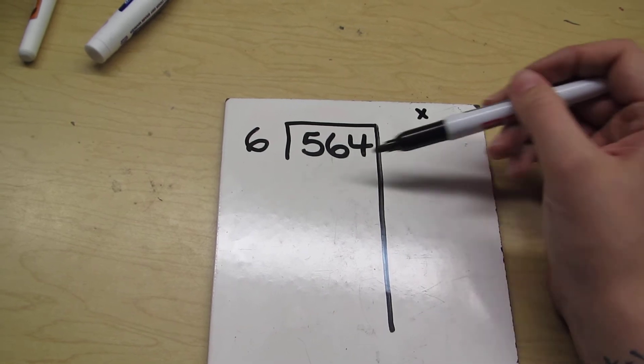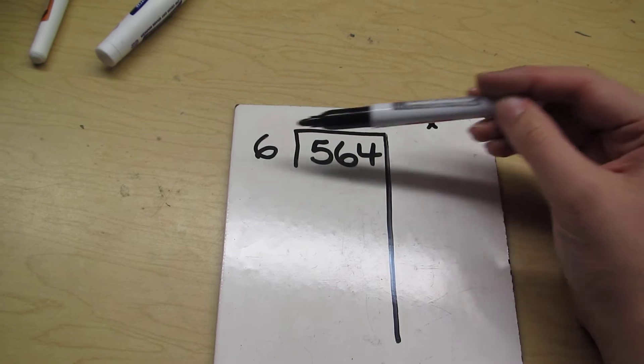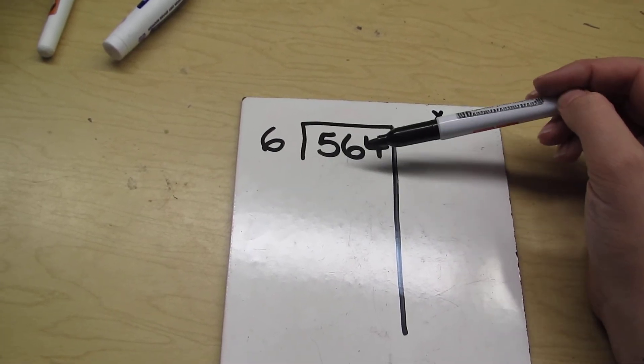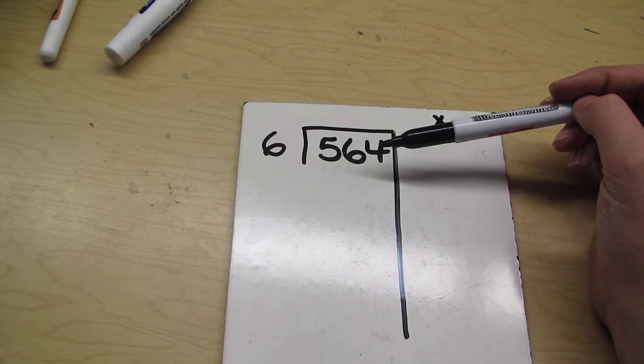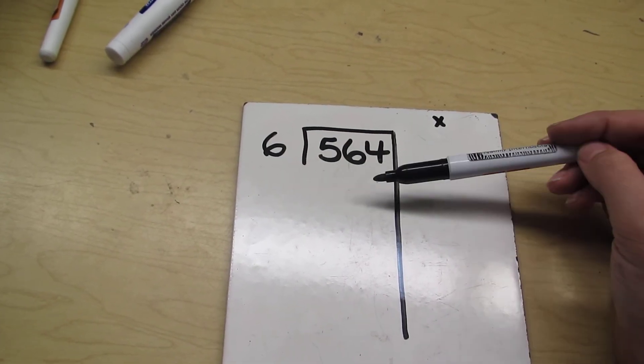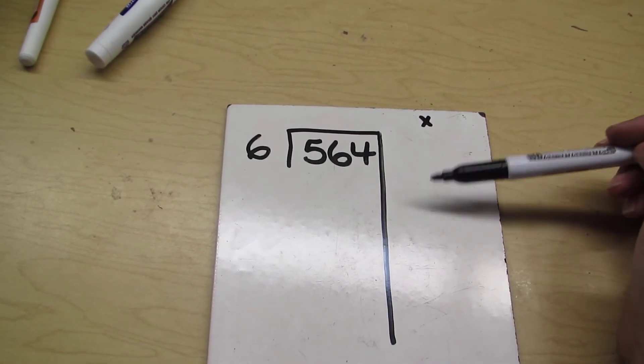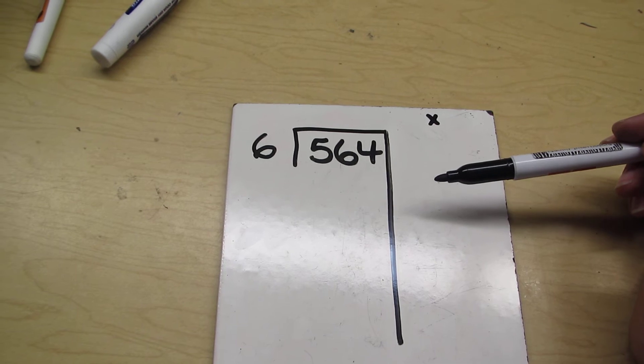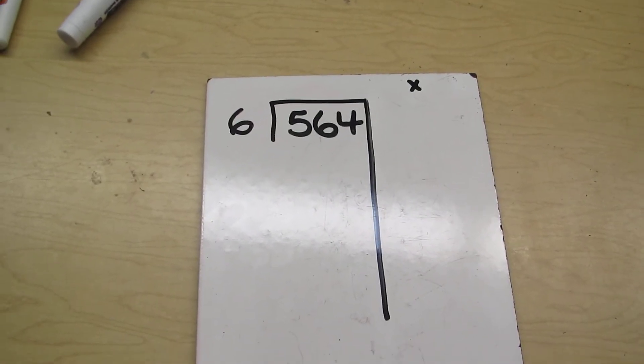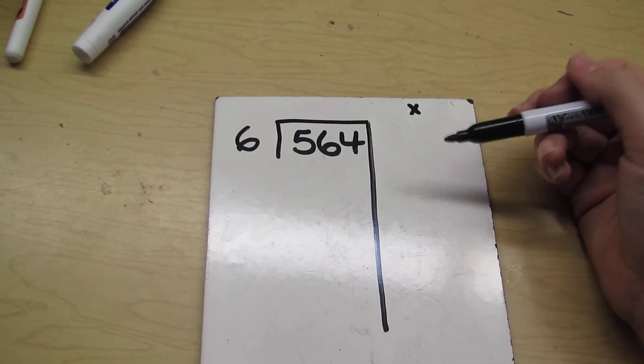We have to think about a number that's going to be multiplied by 6 that is as close as possible to the number we're working with. We want to do 6 times something that's close to 564. It's really important that the numbers that go here are easy to work with, so you're not going to do 6 times 72 or 6 times 38. You're picking numbers that are easy, that end with a zero.